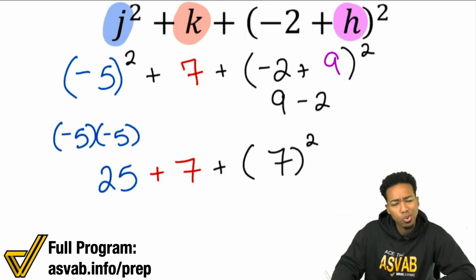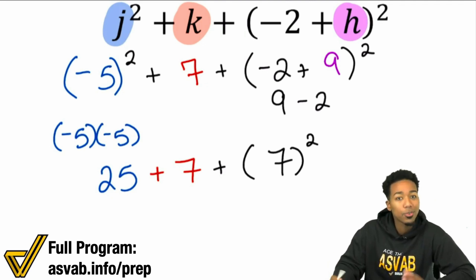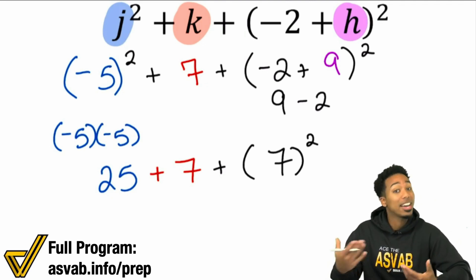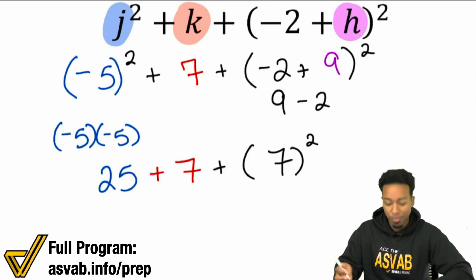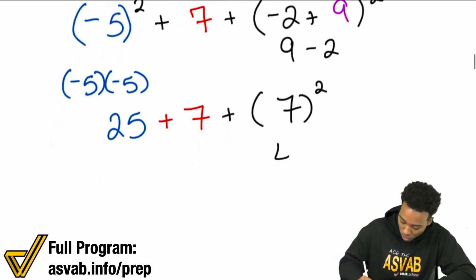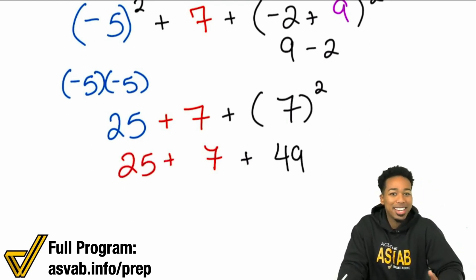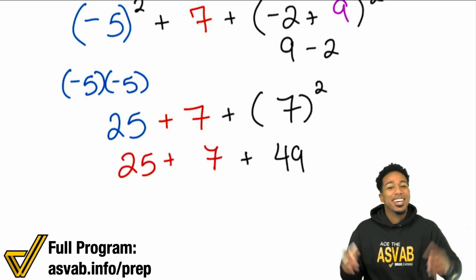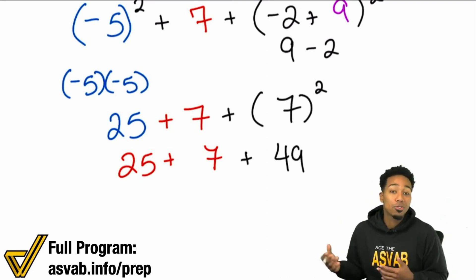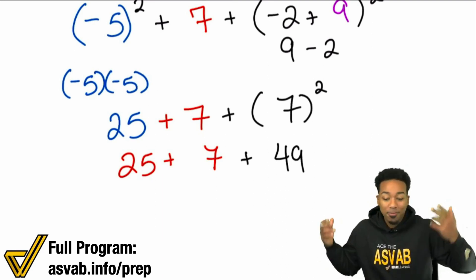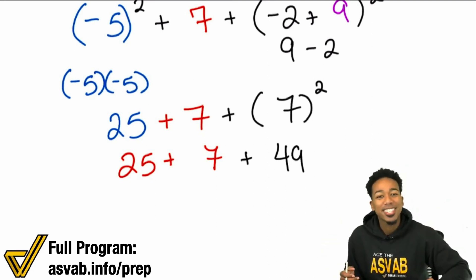What's 7 squared going to be? Squaring a number means multiplying that number by itself — so 7 times 7 gives you 49. Then you have your 7, and your 25. Now this becomes an adding game and you're all set. You can use mental math at this point to solve it.